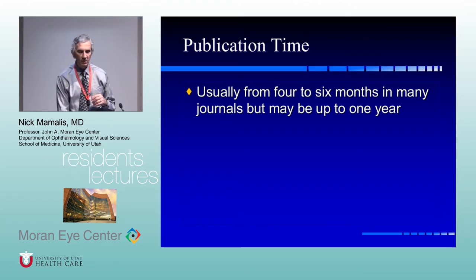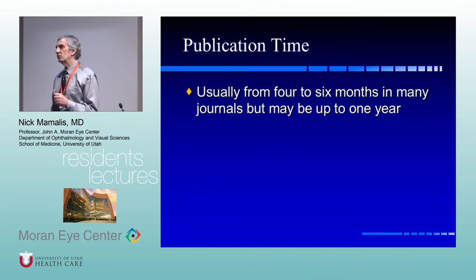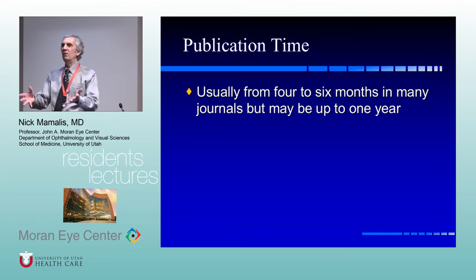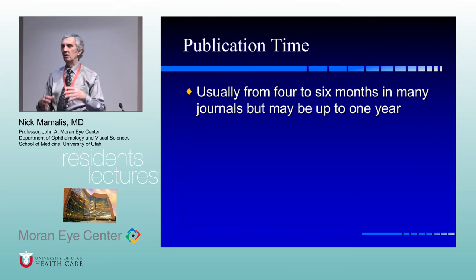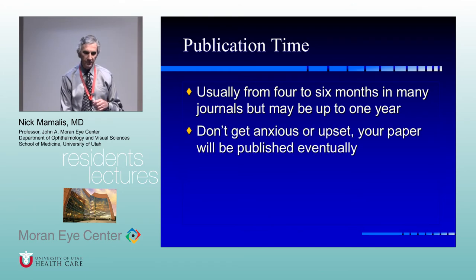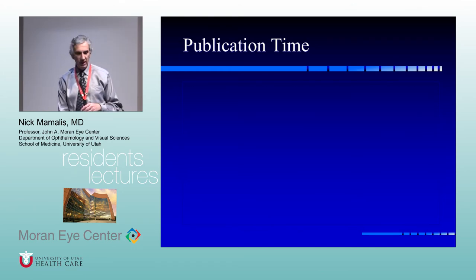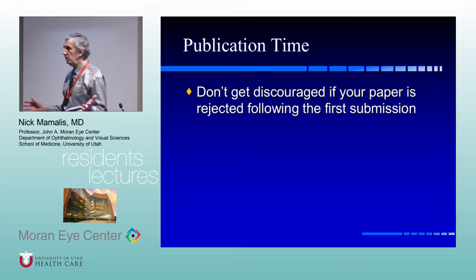Publication time — it's four to six months at best. People often say they sent their paper in last week, where is it? The reviewer hasn't even accepted it yet. Realistically it's going to be about four to six months, but some journals it's up to a year. Don't be impatient; it'll eventually get published but it does take some time. If it's rejected following the first submission, take the reviewer's comments and make it a better paper.